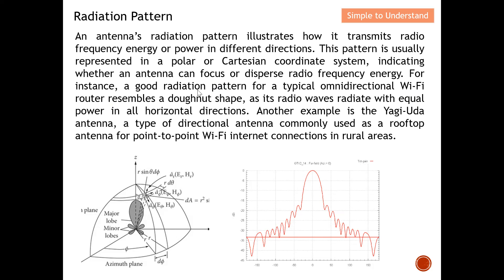For example, a good radiation pattern for a typical omni-directional Wi-Fi antenna resembles a donut shape. The radio wave radiates with equal power in all horizontal directions — they mainly radiate electromagnetic waves in the horizontal direction.